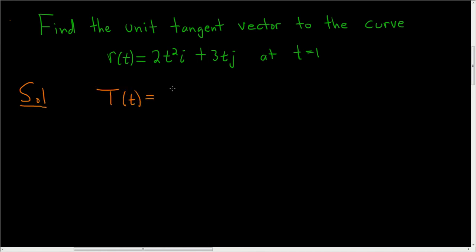T(t) equals the derivative of r divided by the magnitude of the derivative of r. This is the unit tangent vector formula.